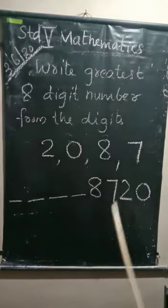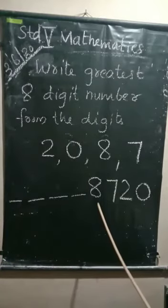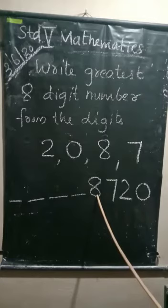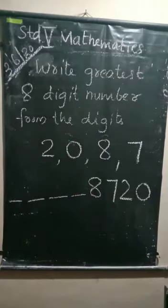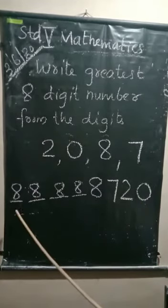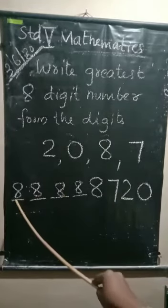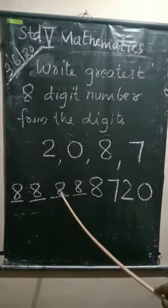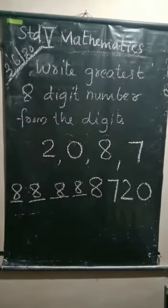For getting an eight-digit number, we should repeat the greatest digit in the remaining places. The greatest digit here is 8, so write 8 in all remaining places. Now we get the eight-digit number. Can you read this number? It is eight crore 88 lakh 88 thousand seven hundred and twenty. Understood?